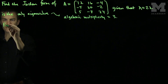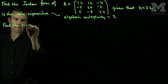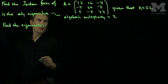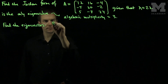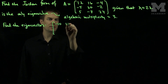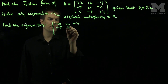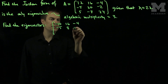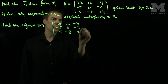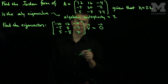So if we find the eigenvectors, we need to solve the equation (A - 22I)v = 0, where A - 22I is the matrix [-10, 16, -4; -5, 8, -2; 5, -8, 2] applied to V equals zero.